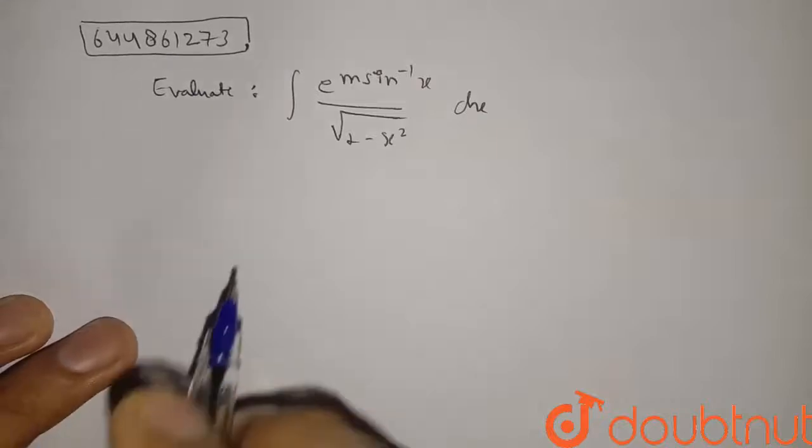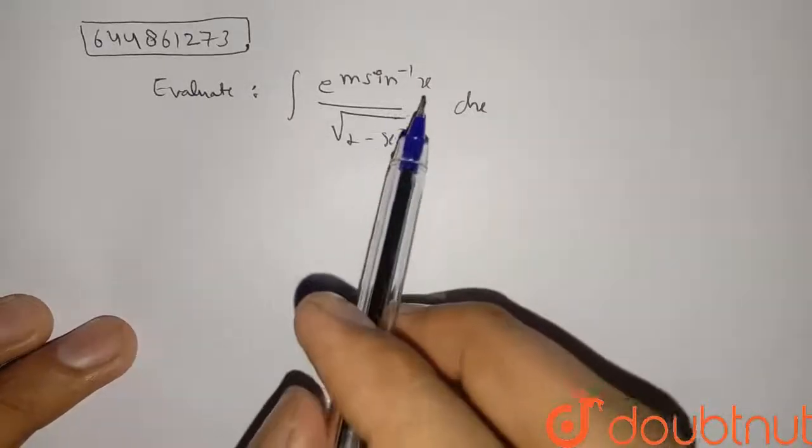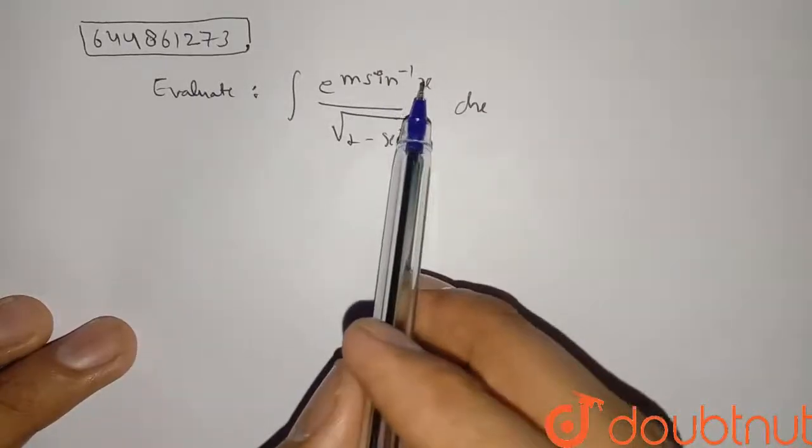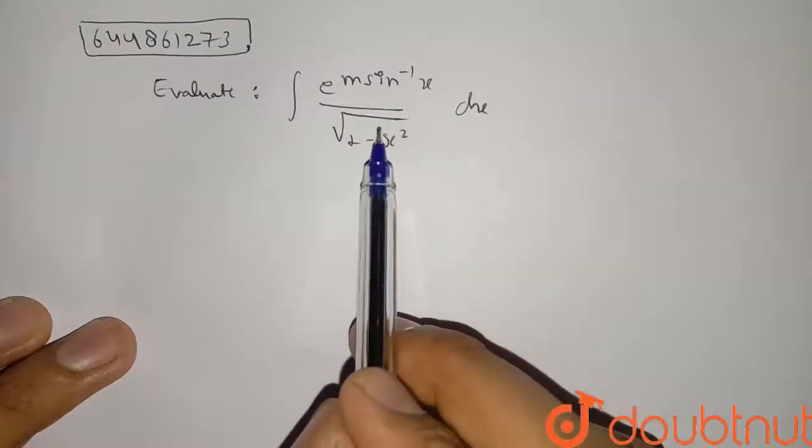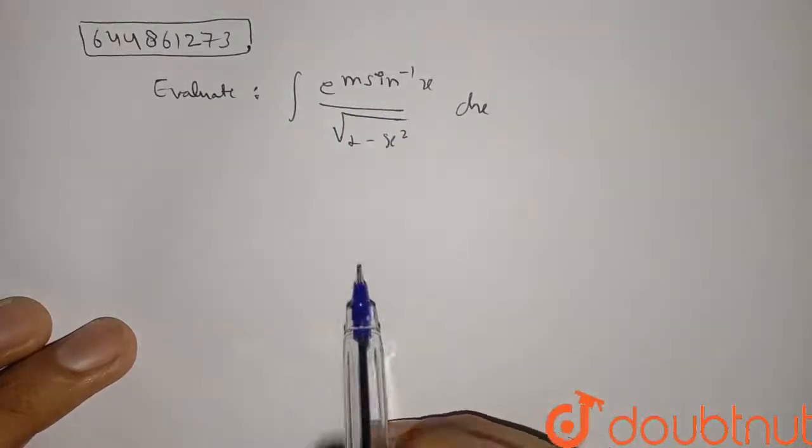So this is very simple question. You can see if I put the sine inverse x equal to t, so it is simply derivative. It is given one upon root of one minus x square, right?